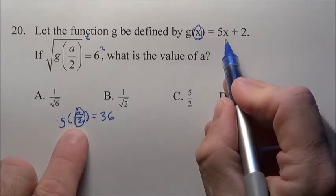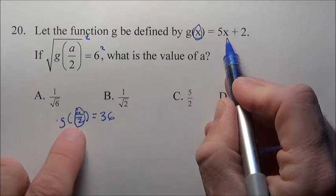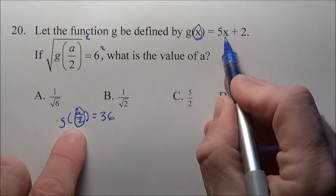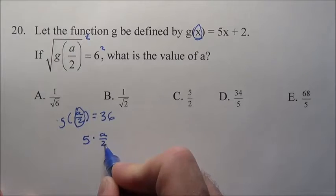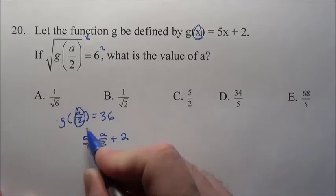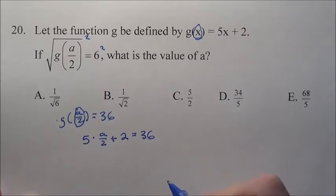Normally, if I had g(4), you'd just plug a 4 right there. If I had g(7), you'd just plug 7 in. It's a/2, so I just replace that with a/2. So here's what I have: 5 times a/2 plus 2. We know that equals 36 from what we just said above.